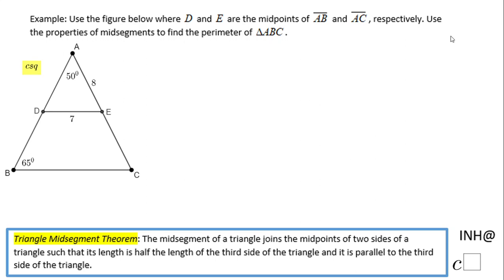Welcome back to I Need Help at Cisco. In this example, we have to find the perimeter of triangle ABC using the property of midsegments. Let's take a look at this problem.